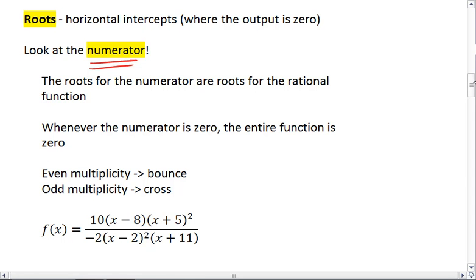Just like we saw with polynomials, if the factors in the numerator have an even multiplicity, then they bounce. If they have an odd multiplicity, then they cross.